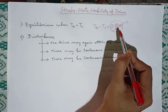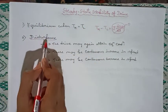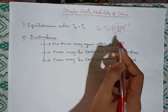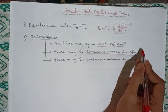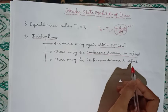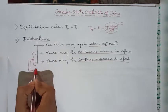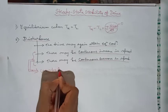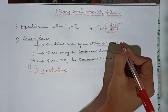In equilibrium condition, the drive will not accelerate or decelerate. Now a disturbance may affect this equilibrium condition in three ways. After the disturbance, the drive may again attain equilibrium condition. In some cases the drive may continuously increase in speed, or there may be a continuous decrease in speed. In these latter two cases the drive will never regain its equilibrium position — this is known as unstable equilibrium. The first case, where the drive again attains equilibrium, is known as stable equilibrium.